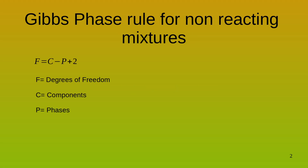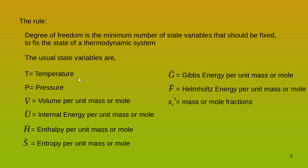What is the Gibbs phase rule for non-reacting mixtures? You may have mixtures in which reactions take place — those would usually be in a reactor — and then you have fluid mixtures which are essentially non-reacting. The Gibbs phase rule for non-reacting mixtures is: degrees of freedom F equals C (components) minus P (phases) plus 2. The degrees of freedom F is the minimum number of state variables that must be fixed to fix the state of the thermodynamic system.